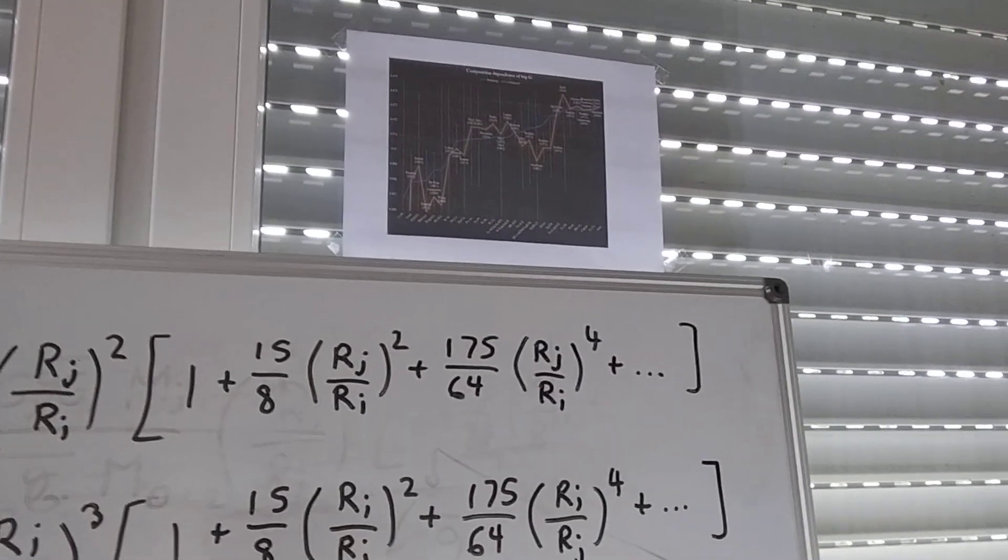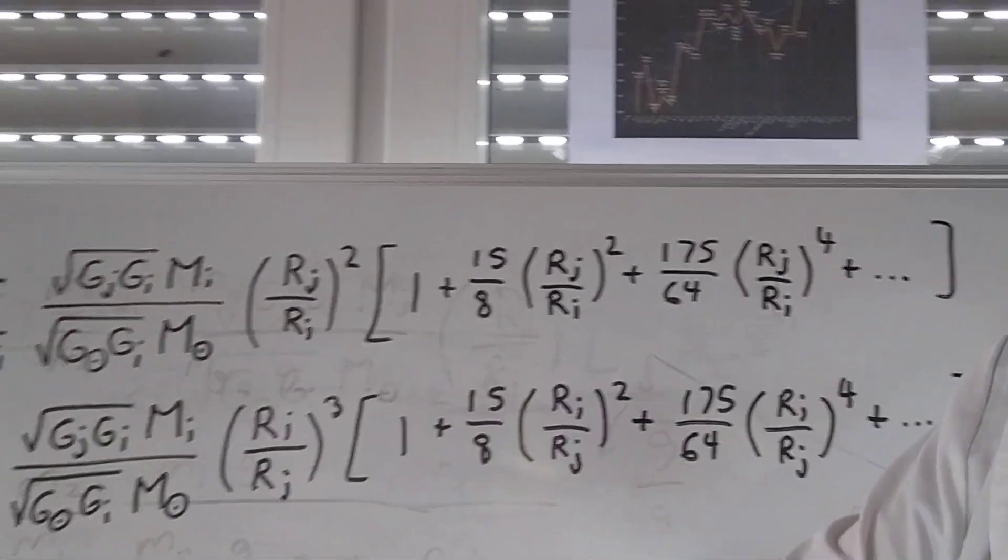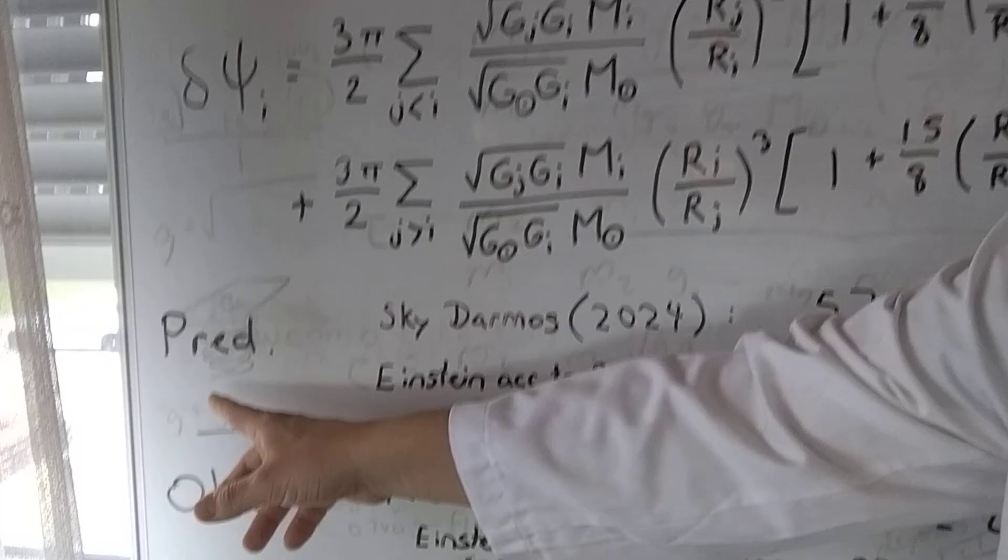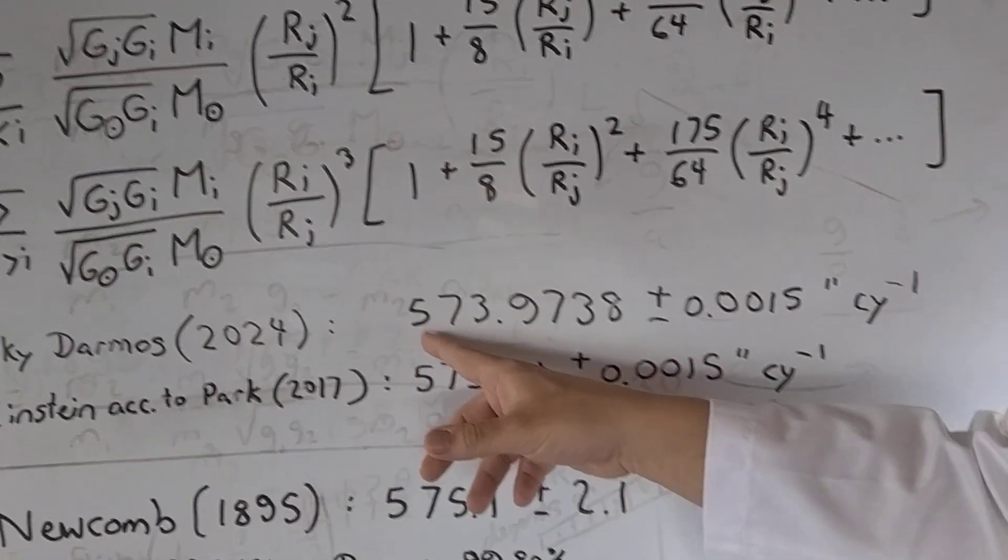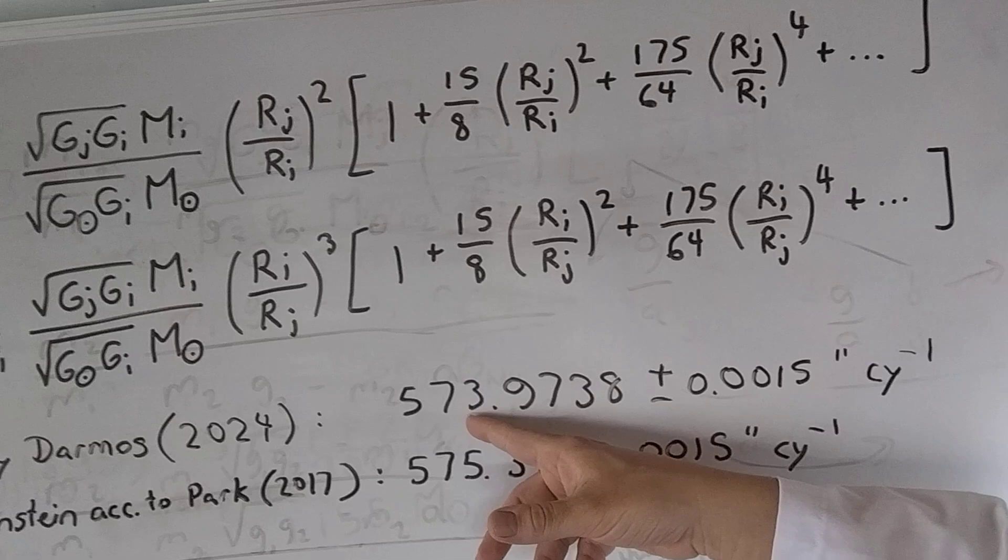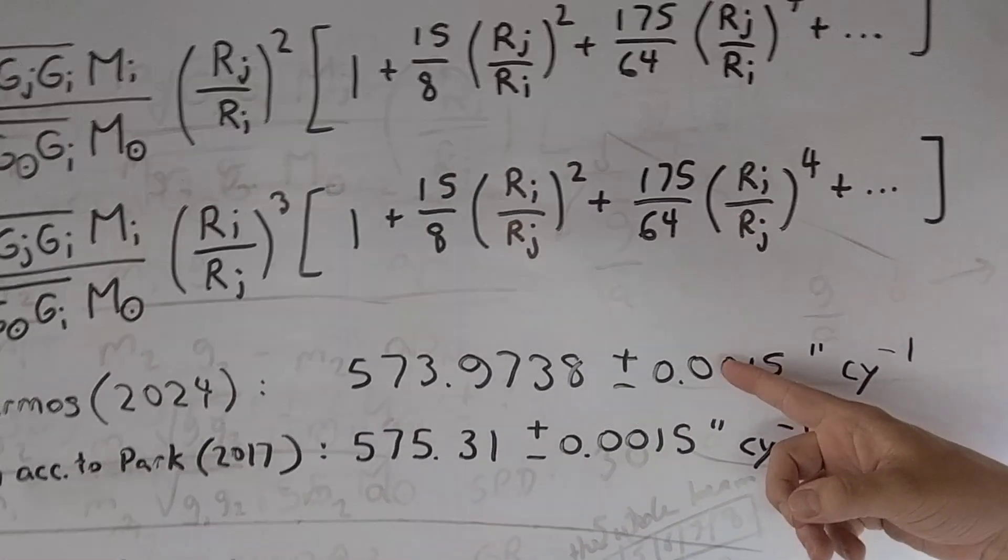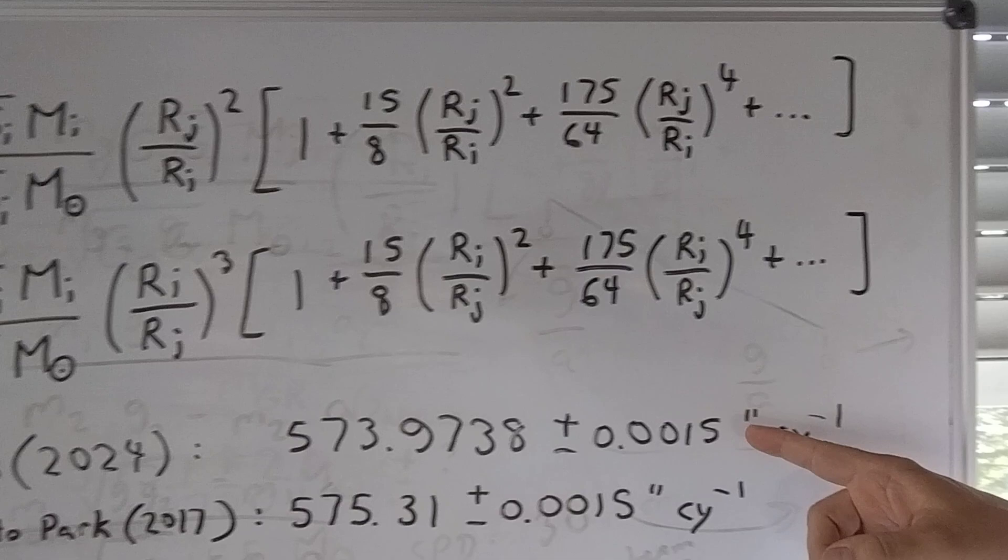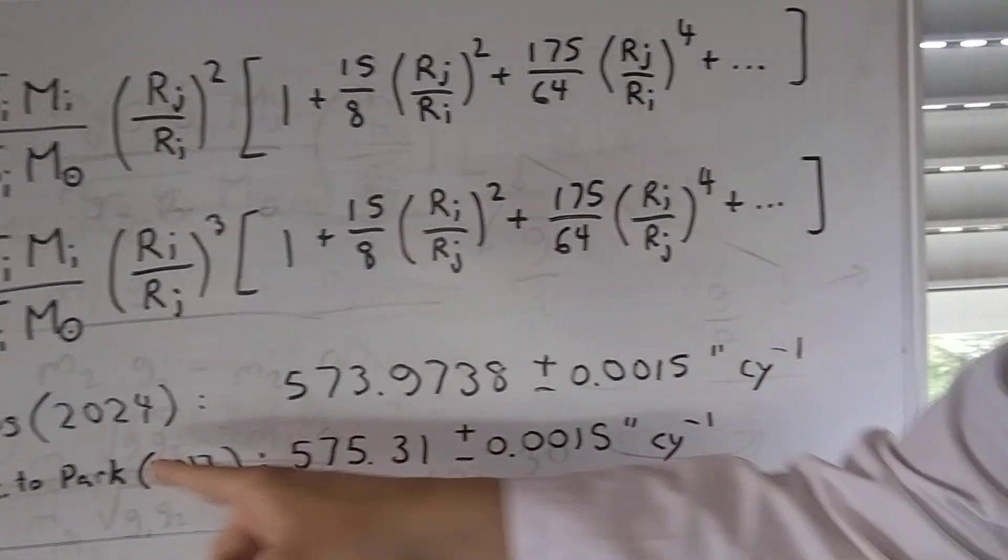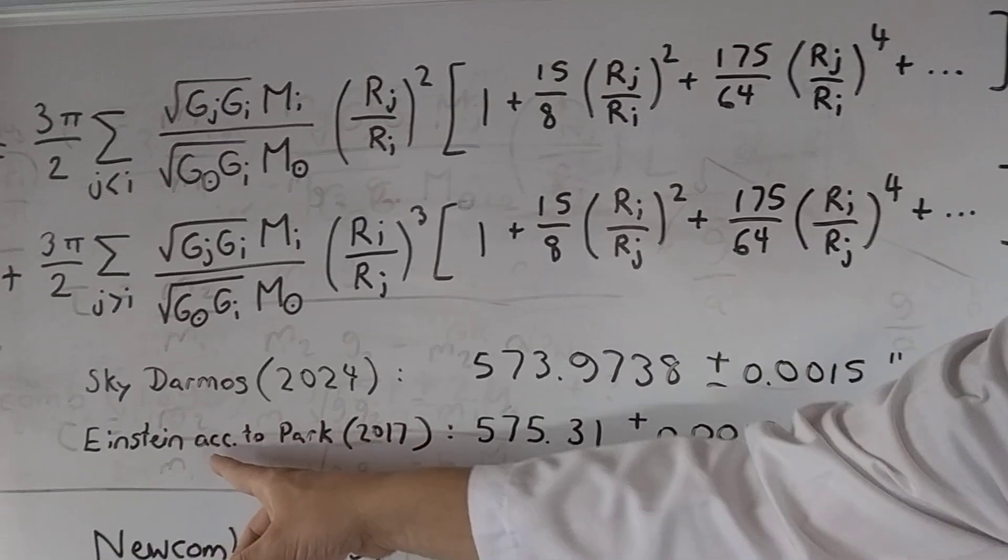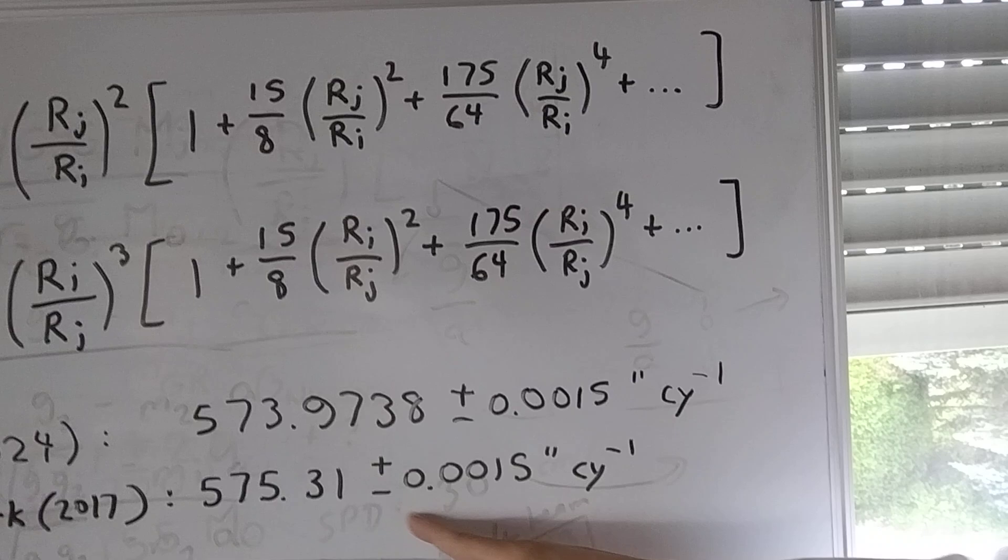So the results we get are here, the predictions. So the predicted values, my value, 573.9738 plus minus 0.0017 arc seconds per century. And according to Einstein's theory via Park 2017, we get this value.